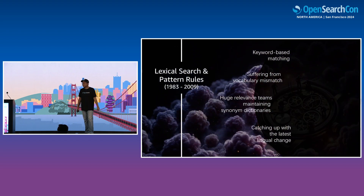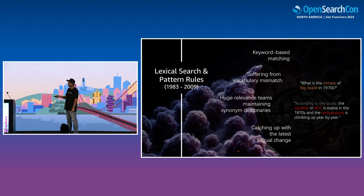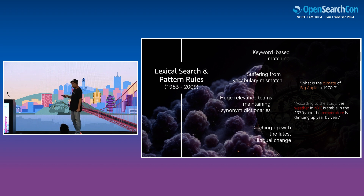Let's go back to the age when there was only lexical search. Keyword-based matching suffers from vocabulary mismatch. Here is an example: "What is the climate of Big Apple in the 1970s?" There is a document saying: "According to the study, the weather in NYC is stable in the 1970s and the temperature is climbing up year by year." It's actually a quite good match, but "climate" cannot be matched with "weather", and "Big Apple" is not connected to "NYC". Temperature and climate have connections too, but we miss them all. This would be considered a non-match with keyword-based matching.